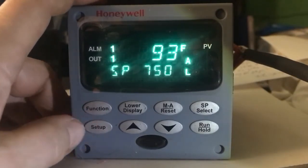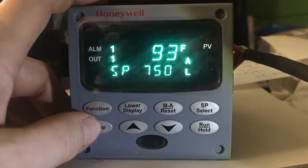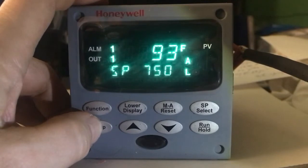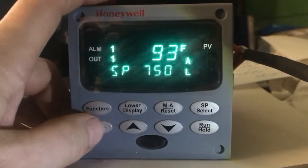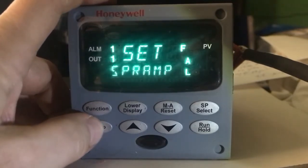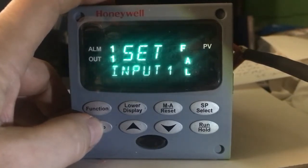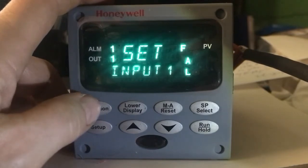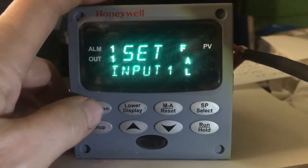So this is a UDC 2500 from Honeywell. If you press the setup key it will bring you into the groups so you could program the different groups. You want to go to the input group, and then once you get to the input group you want to press the function and go through the different functions for the input group.